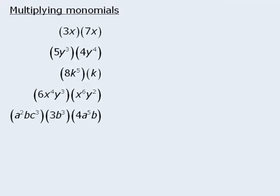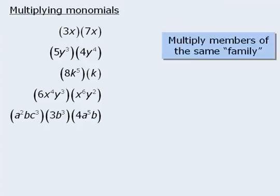When multiplying monomials, the rule is to multiply members of the same family. So for example, we will multiply constants by other constants, x's by x's, y's by y's, and so on.